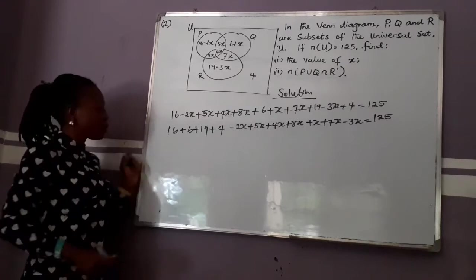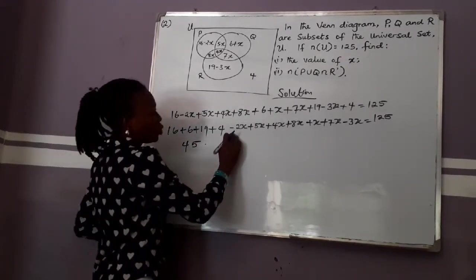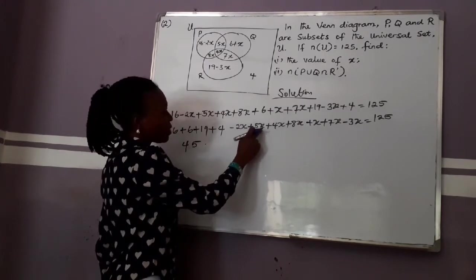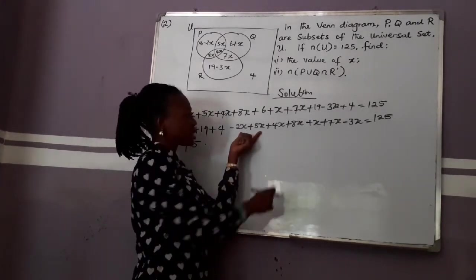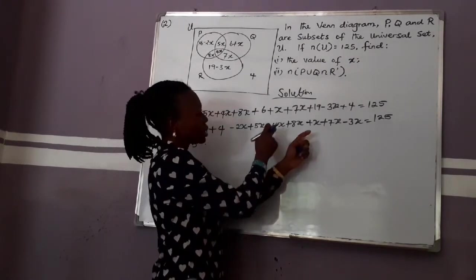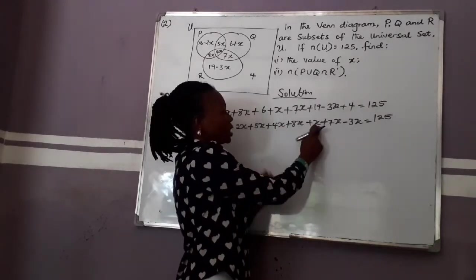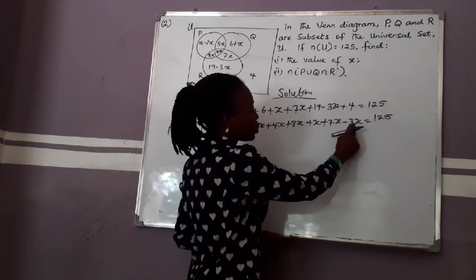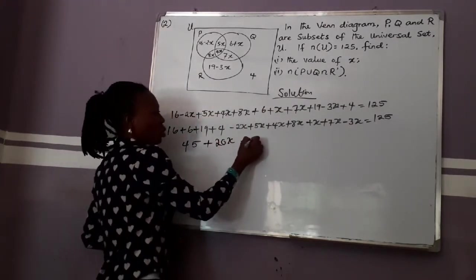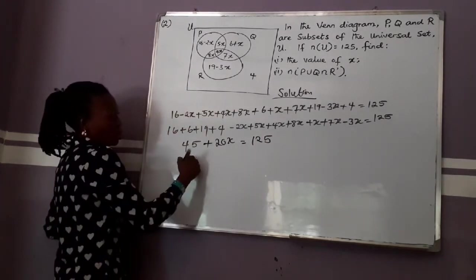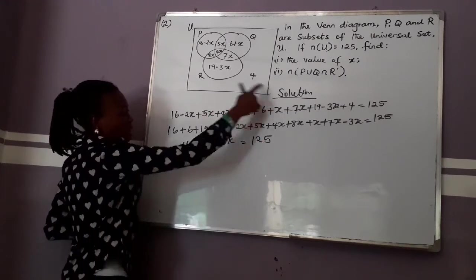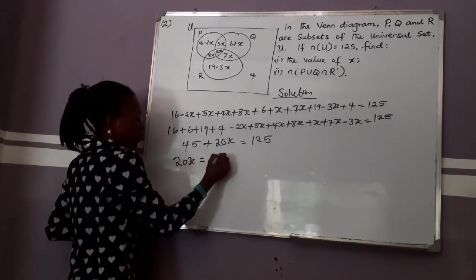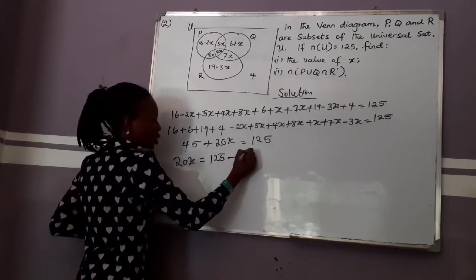Summing the constants gives 45. Collecting the X terms: minus 2X plus 5X gives 3X, plus 4X gives 7X, plus 8X gives 15X, plus X gives 16X, plus 7X gives 23X, minus 3X gives 20X. So we have 45 plus 20X equals 125. Moving 45 across the equality sign: 20X equals 125 minus 45, which is 80.